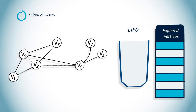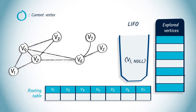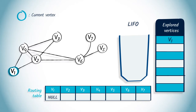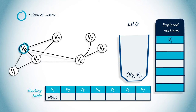We begin by pushing the starting vertex V1 into the LIFO with null as parent. We pop V1 and null from the LIFO. As V1 is not in the list of explored vertices, we mark it as explored and update the entry corresponding to V1 in the routing table by setting it to null. Then we push all neighbors of V1 that are not in the list of explored vertices, which are V2 and V4, with their parent V1. We remove V4 with V1 as parent from the LIFO, because it's the last element that was added. V4 is not in the list of explored vertices, so we mark it as explored and update the routing table entry for V4 to V1.